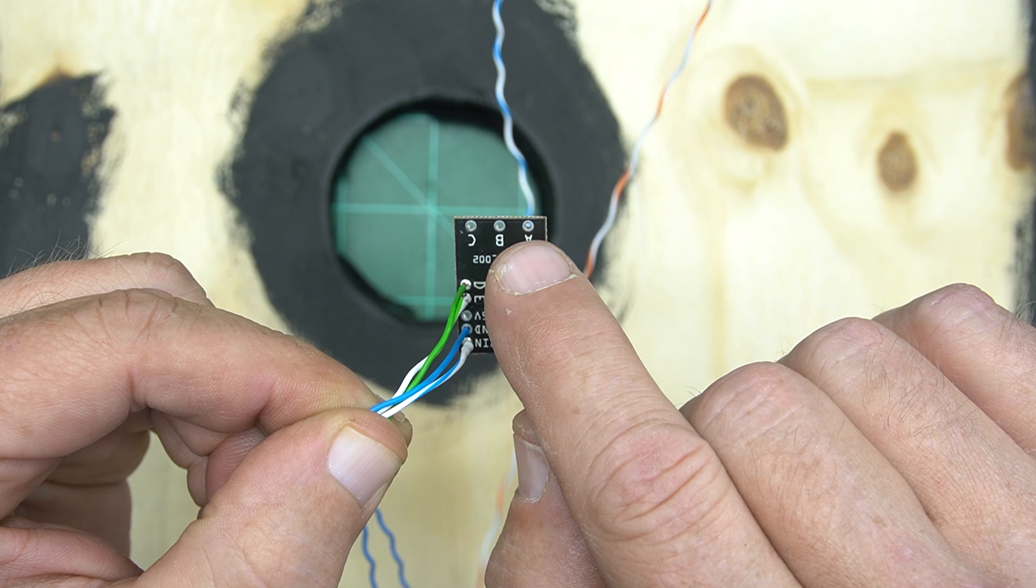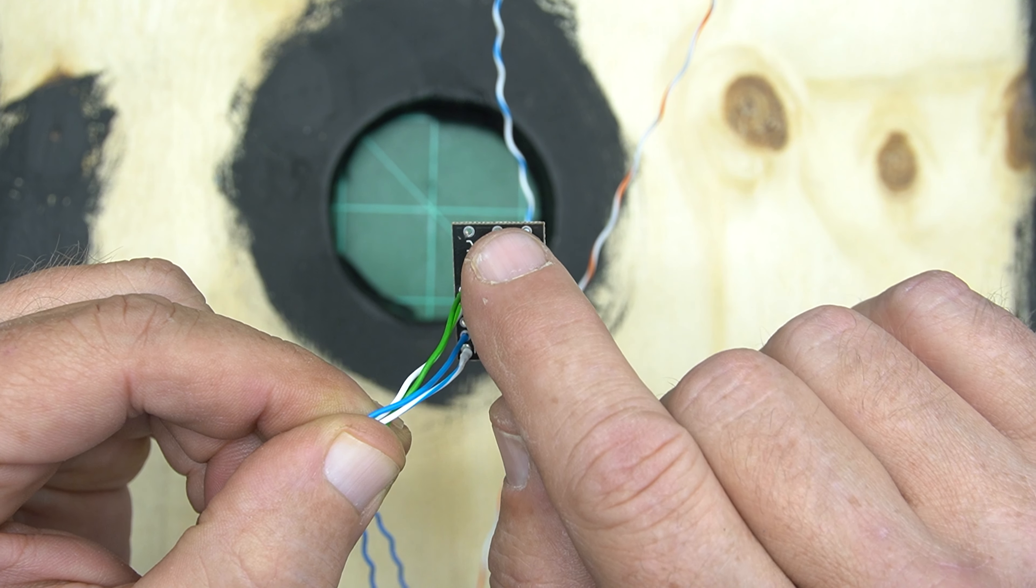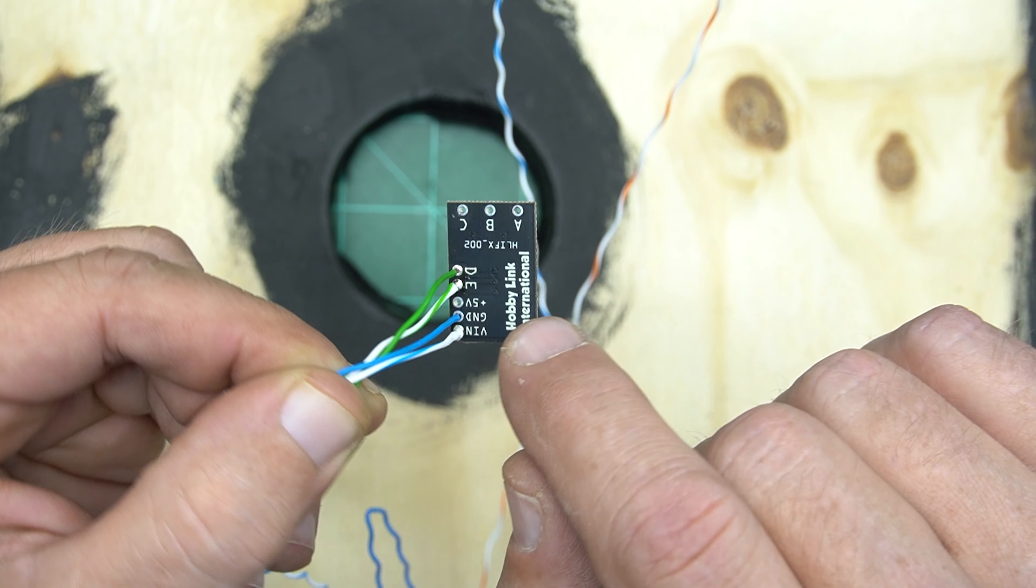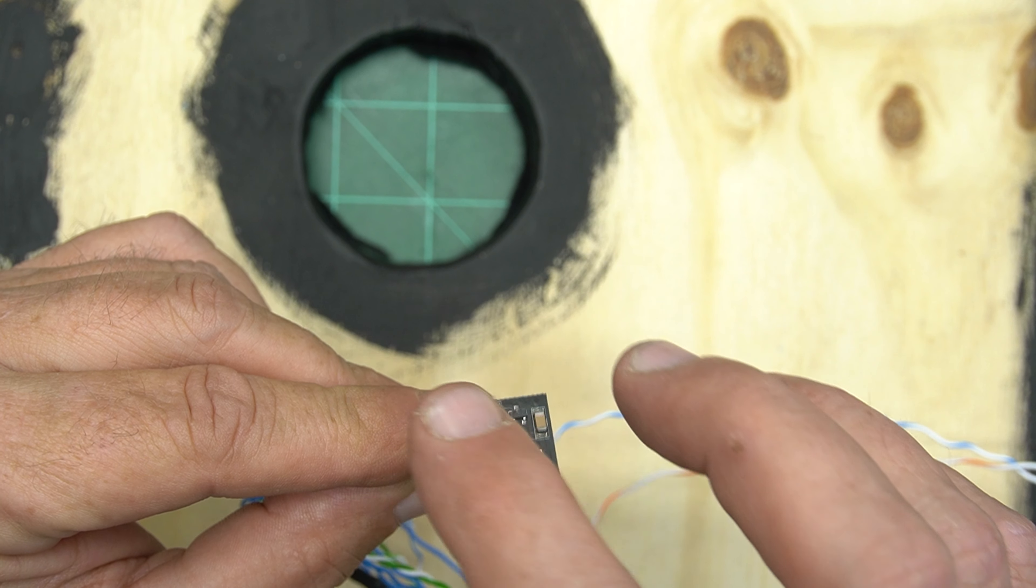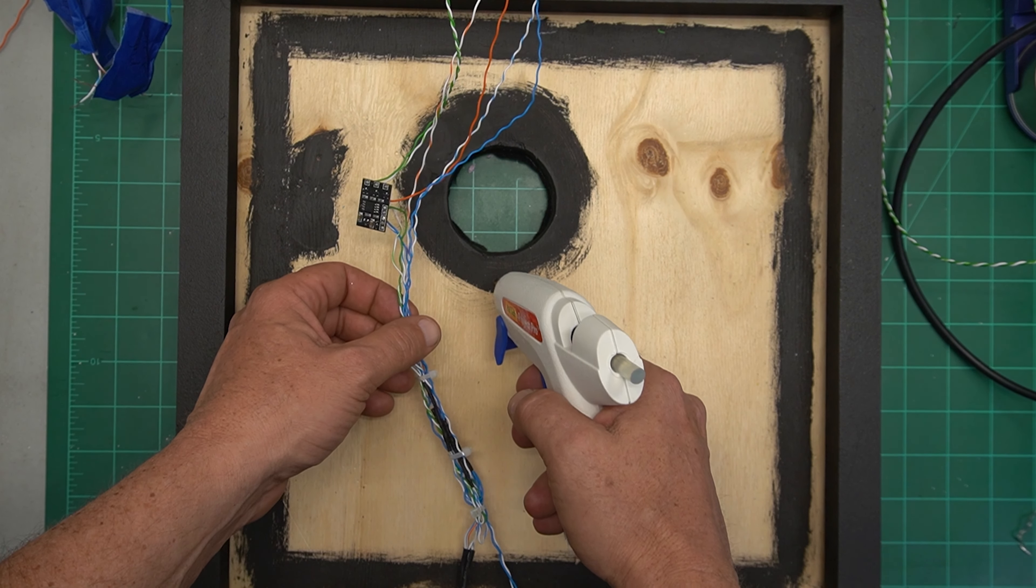So far on the board, we have soldered our V in which is our positive, our ground which is our negative, our D and E jumpers. These are going to go back to ground so our A, B and C effects can take effect when we hit that on-off switch. Each one will go to a different LED and produce a different effect.